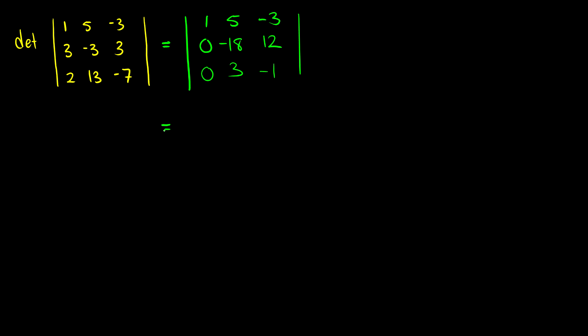Now I want to divide the second row by 6. Remember, if we multiply a row by 1/6, then det(B) = (1/6)·det(A), which means det(A) = 6·det(B). So we have to pull a factor of 6 out. If we took out 1/6 instead, we'd make the determinant smaller. So we compensate by multiplying the overall determinant by 6. At this point we have 6 times the determinant of [1, 5, -3; 0, -3, 2; 0, 3, -1].